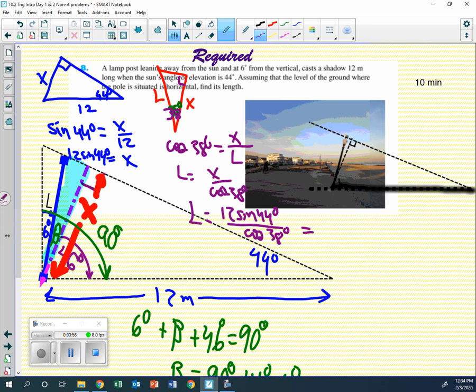And what did you get for that one? 10 point something? What's that? 10 point what? 5, 7, 10.6. That sounds great. 10.6 meters.